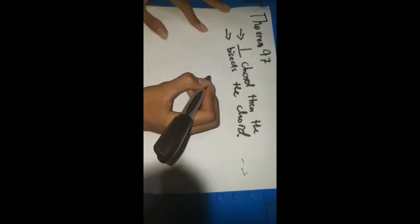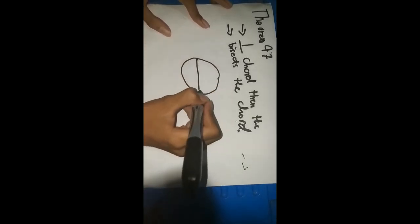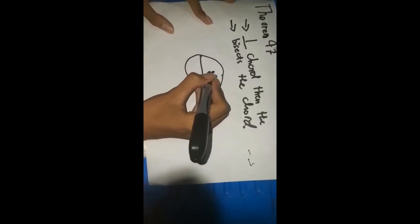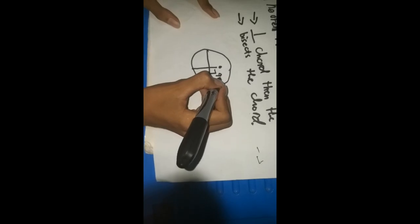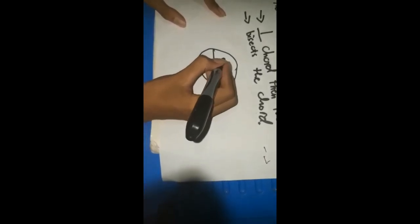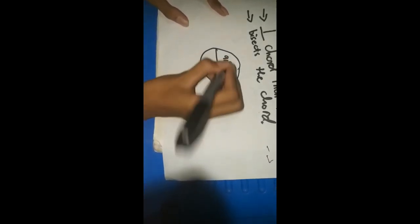For example, I'm going to draw first a chord inside a circle. If the radius is perpendicular to the chord, then it forms a 90-degree angle, and then it bisects the chord. So to say, this is 90 degrees, and this is also 90 degrees.